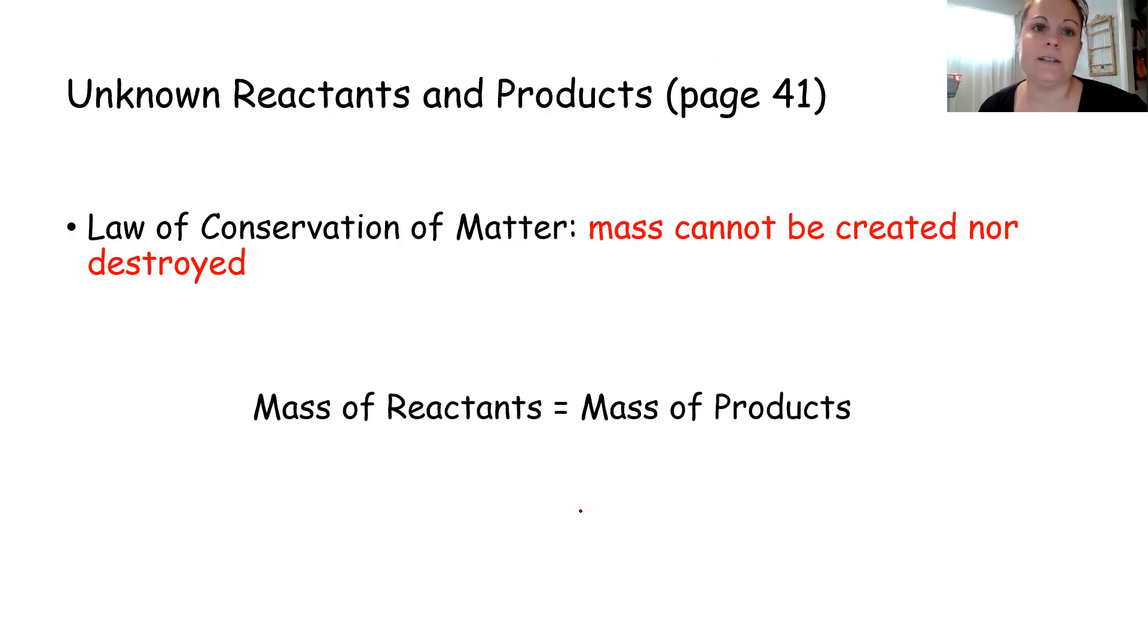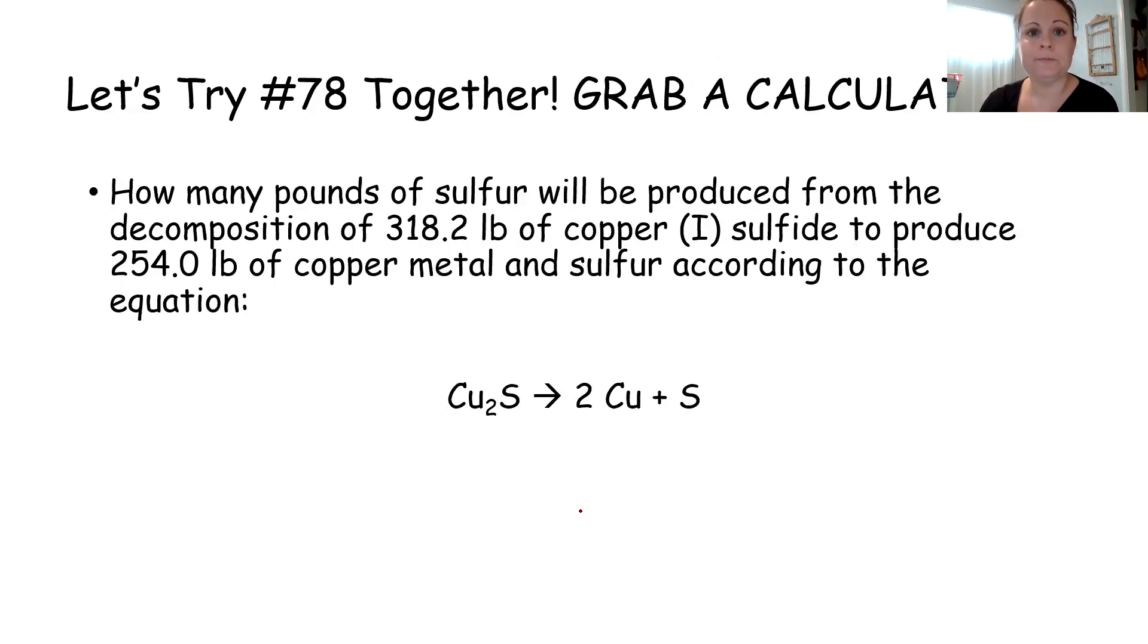Last but not least, unknown reactants and products. We're going to focus just on conservation of mass because that's what the regents focuses on. Mass cannot be created nor destroyed. So the mass that goes in on your reactant side of the equation is the mass that has to be produced. So let's try number 78 together. You're going to need your calculator for this.